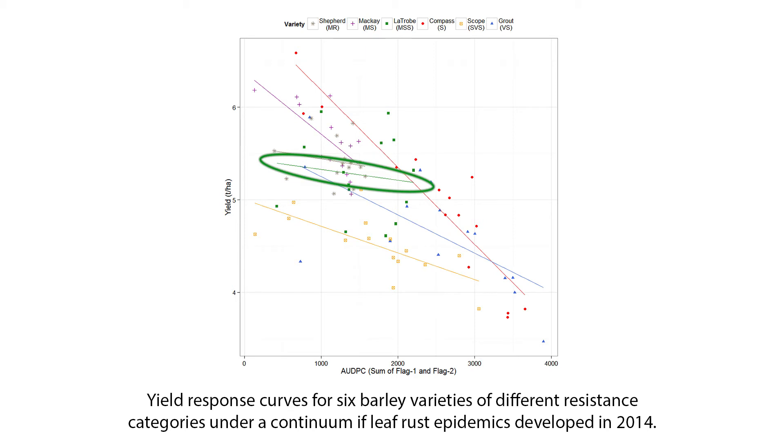So it tells you two things. One is, if you grow La Trobe, you might not have to apply fungicide. If you decide you want to, there's a bit of a period of forgiveness — so that if you don't get it on this week but it goes on next week, you're not going to lose a lot of yield in that lag phase. Whereas if you waited a week once you see disease in Compass, you could lose a lot of yield — a significant amount of yield.